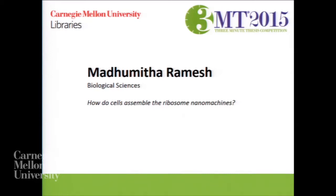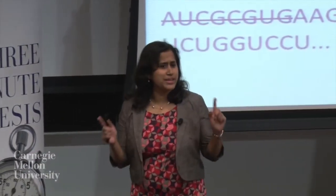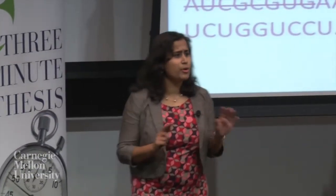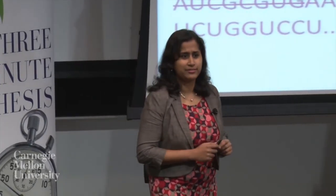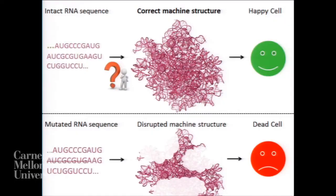Our next speaker is Madhu Ramesh, whose talk is titled 'How do cells assemble the ribosome nanomachines?' What is perhaps the most important and most abundant machine on the face of the planet? I would argue it's the ribosome, shown here. It reads and interprets your genetic code in your cells.